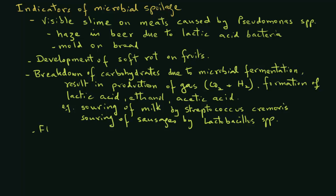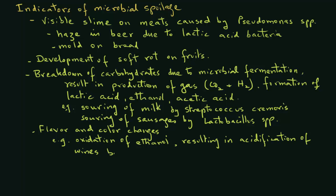There can also be changes in flavor and color of the food due to the activity of microorganisms. For example, the microorganisms may cause oxidation of ethanol. We see that in acidification of wines that results from acetobacter species. There can also be development of purple spots on bread caused by Bacillus cetilus.